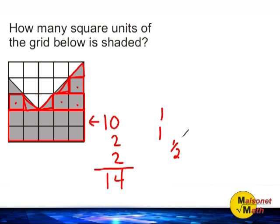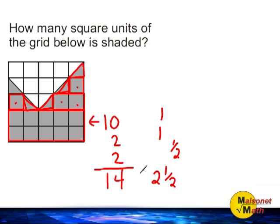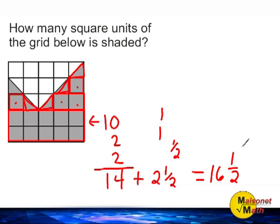One plus one plus one plus one plus a half gives us a total of two and a half square units. Now we have to add fourteen plus two and a half, and that gives us a total of sixteen and a half square units. So we would say the area covered by the shaded portion is sixteen and a half square units.